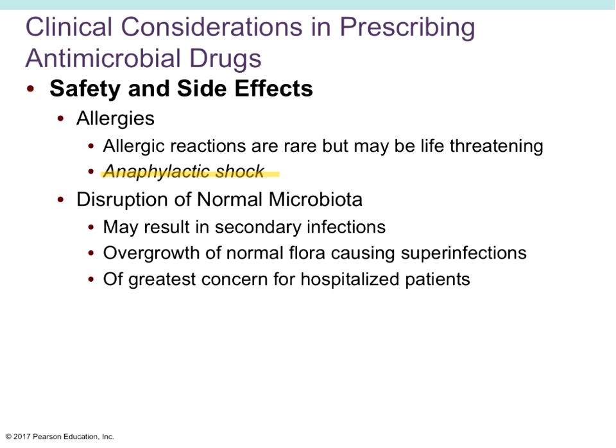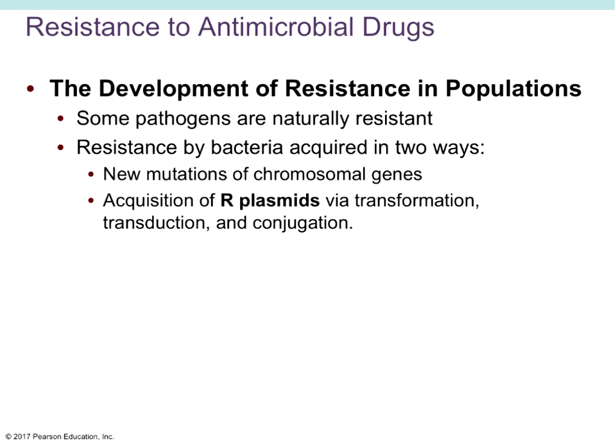We also have to be careful of the development of resistance in populations. Some pathogens are just naturally resistant — just as you naturally have certain physical traits, some microbes just come with a genetic mutation that makes them resistant to a drug. Those naturally resistant organisms can pass that resistance through horizontal gene transfer to other microbes that weren't originally resistant. This can happen through new mutations in chromosomal genes, or through acquisition of resistance R-plasmids via horizontal gene transfer — through transformation, transduction, or conjugation.